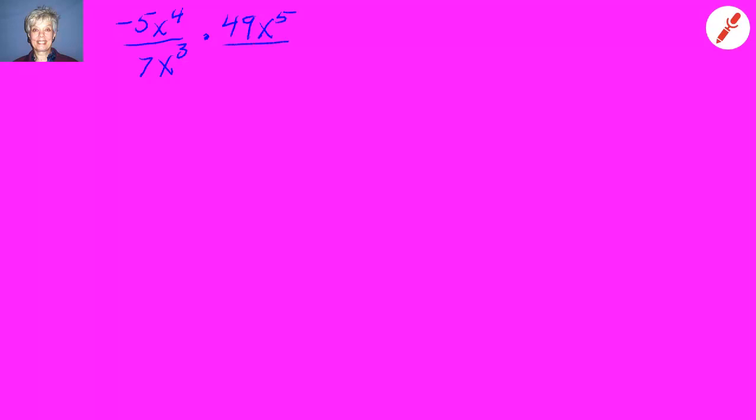Which is really x to the one. Now remember that when you have like bases you subtract the exponents. That's what we're doing right here and we're going to do it in the other fraction also. X to the 5 minus 1 because the x on the bottom is to the 1 power.